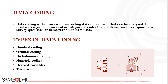Binary coding involves assigning a binary code — for example, 0 or 1 — to data items. For example, responses to a survey question about gender might be coded as: male = 0, female = 1.